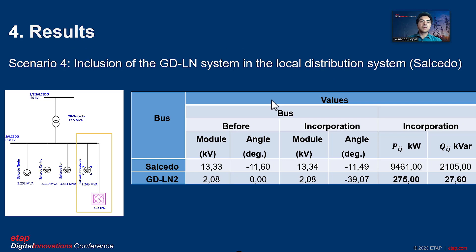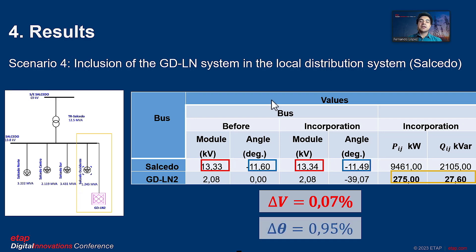Scenario 4: Once the distributed generation GDLN system and the simulation of the local distribution system are completed, the points with the highest demand are verified and the data is captured in real-time. In this case, the inclusion of the distributed generation GDLN system in the 13.8 kV bus corresponding to the Salcedo substation is simulated, where a voltage variation of 0.07% and an angle variation of 0.95% is obtained.